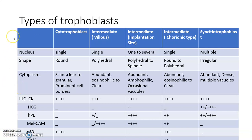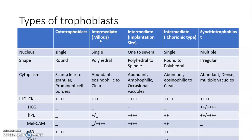Before taking the individual lesions, let's have a quick look at the types of trophoblast. Trophoblasts are of three types: cytotrophoblast, intermediate, and syncytiotrophoblast. Intermediate trophoblasts are of further three types: villus intermediate trophoblast, implantation site intermediate trophoblast, and chorionic type.